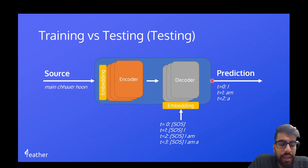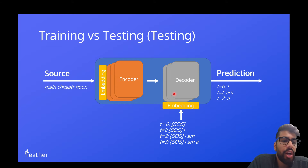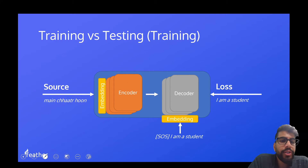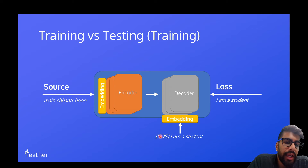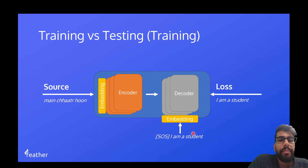This is the inference setting. During training, we actually have access to the target sentence. Instead of using a for loop over every single word we generate, we can mask out the illegal words — and this is where masked self-attention comes in.